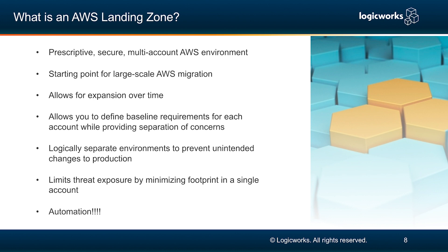So what's the best way to implement a multi-account structure in AWS? AWS Landing Zone. AWS Landing Zone is a prescriptive, secure multi-account AWS environment that's a great starting point for large-scale AWS migrations. It allows for expansion over time because it allows for easily repeatable processes to deploy multiple accounts for different business requirements, different business units, different teams or applications. It allows you to define baseline requirements for each account while providing separation of concerns for each one of those accounts, including the core units in each core account.